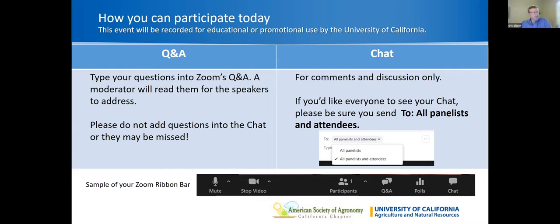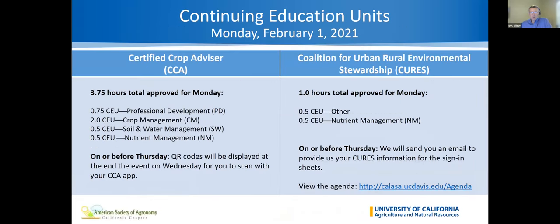In keeping with these objectives, the content of our program must be scientifically rigorous and cannot be a promotion of proprietary products. Research scientists who often participate in our program strive to make use of what they learn and know to achieve outcomes of benefit to society. Hopefully you appreciate the scientific rigor and content of today's program and come away having learned something you could use. Cal ASA membership includes anyone who is in attendance today — there are no membership dues other than registration fees to this conference.